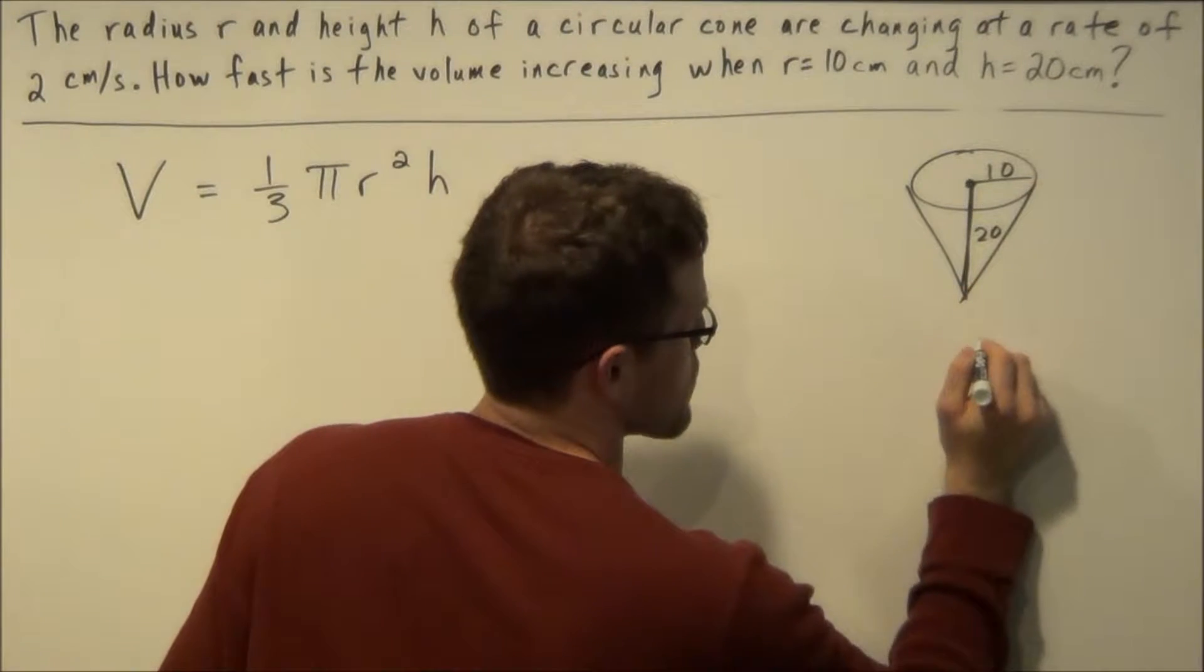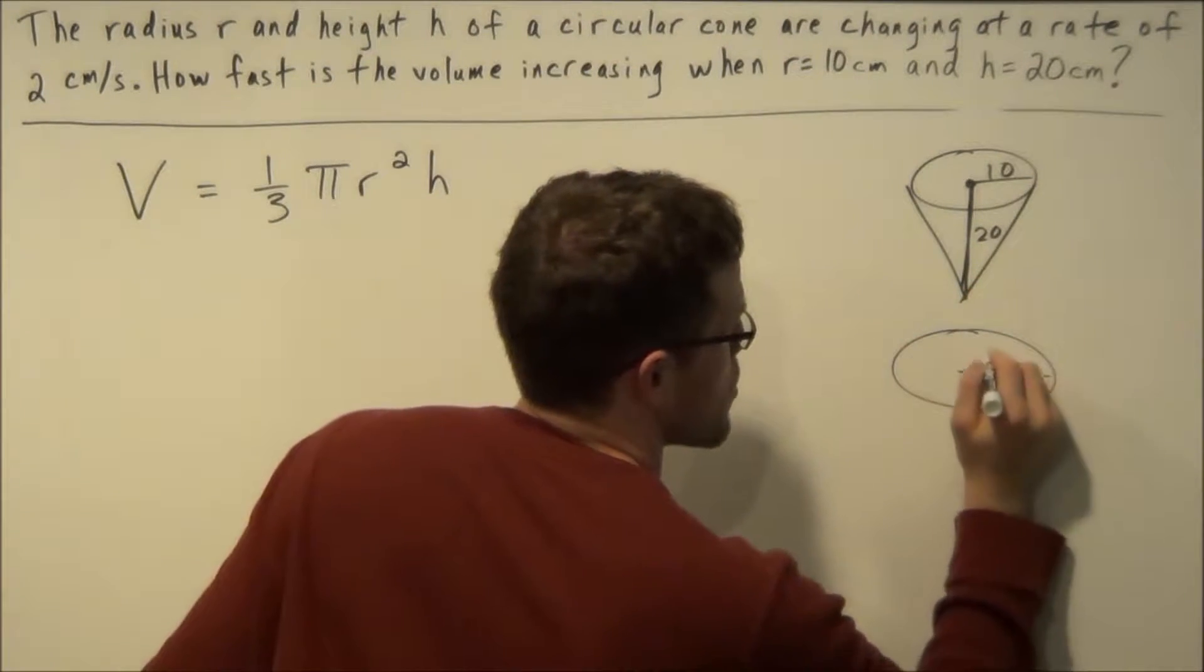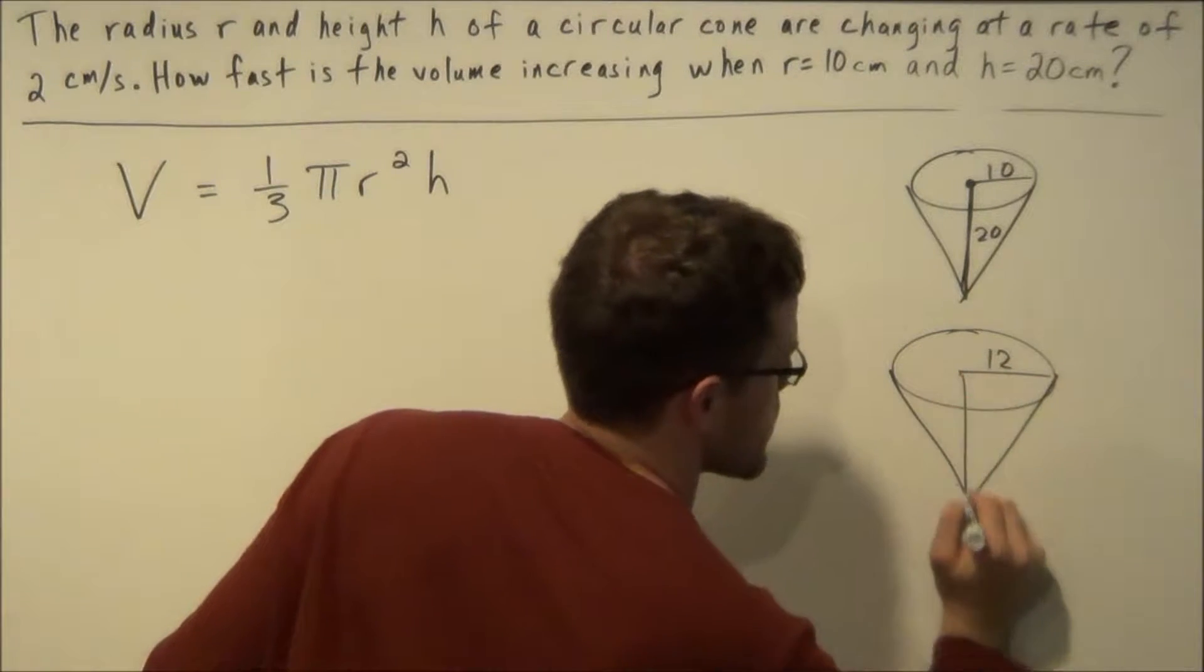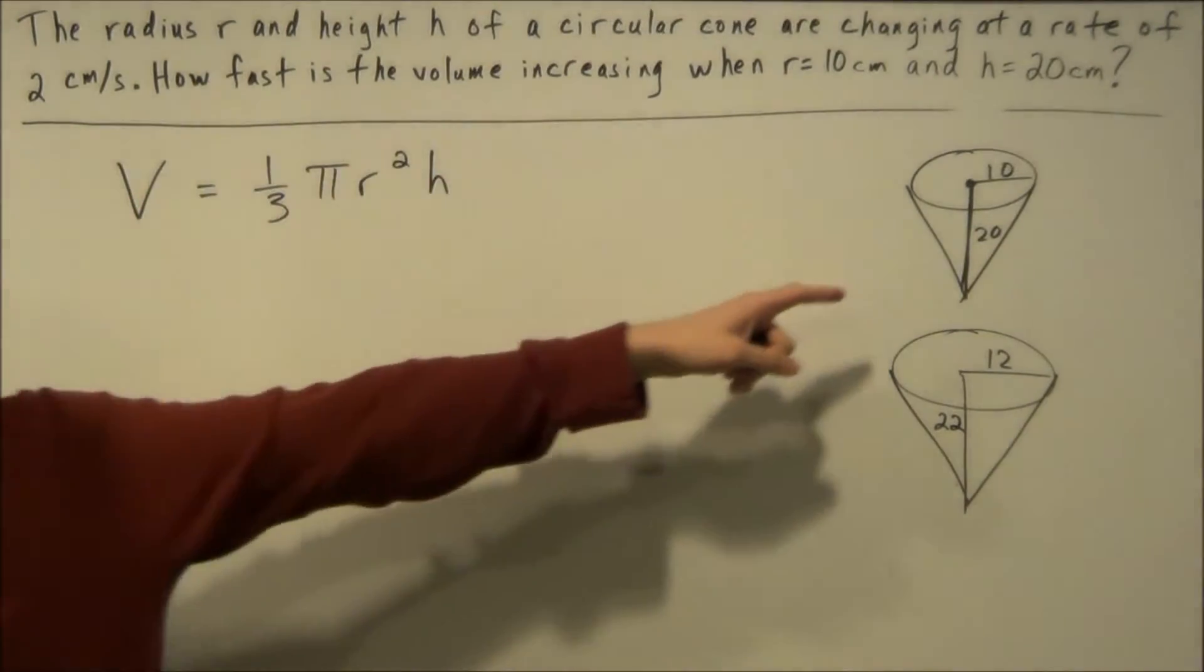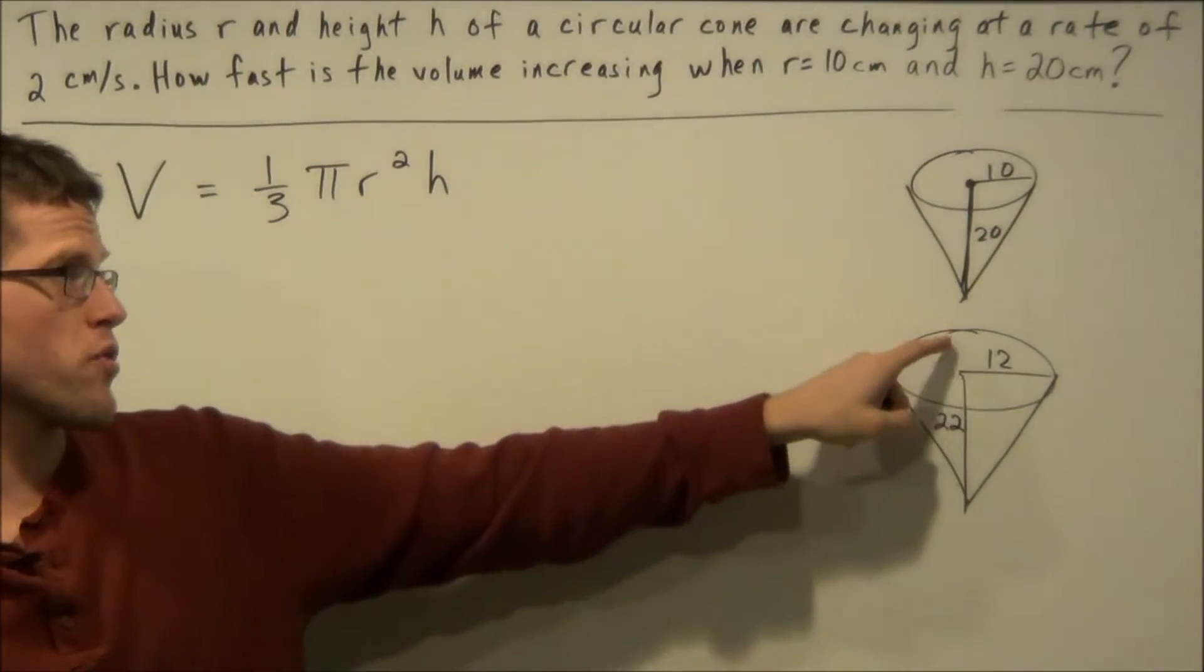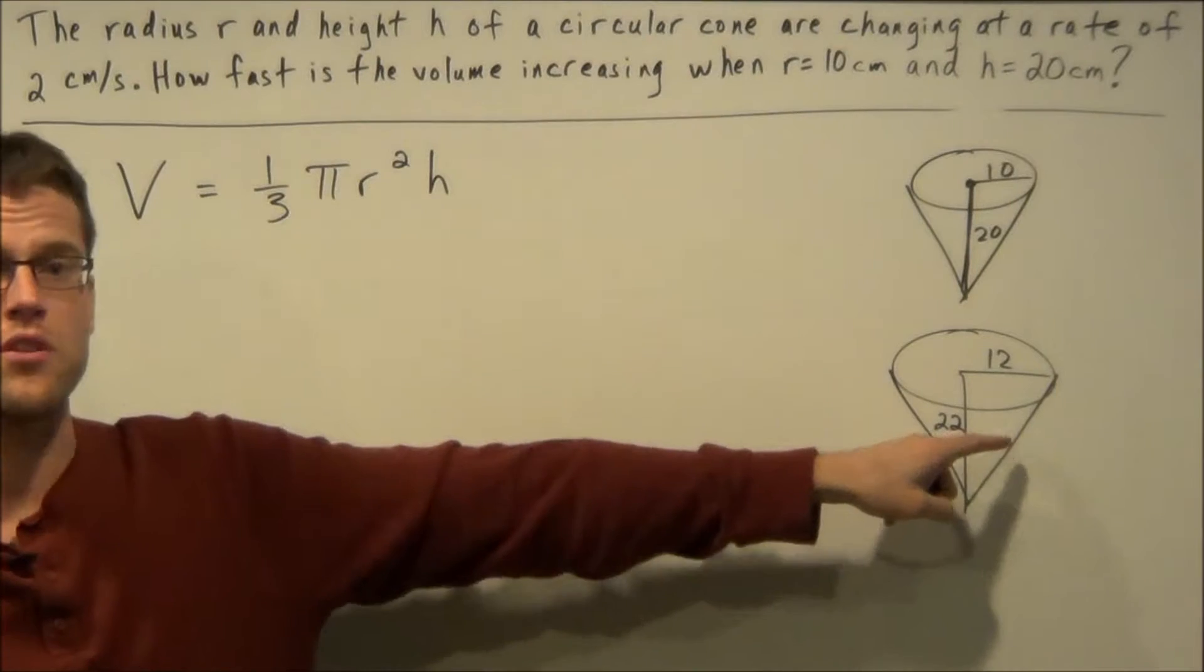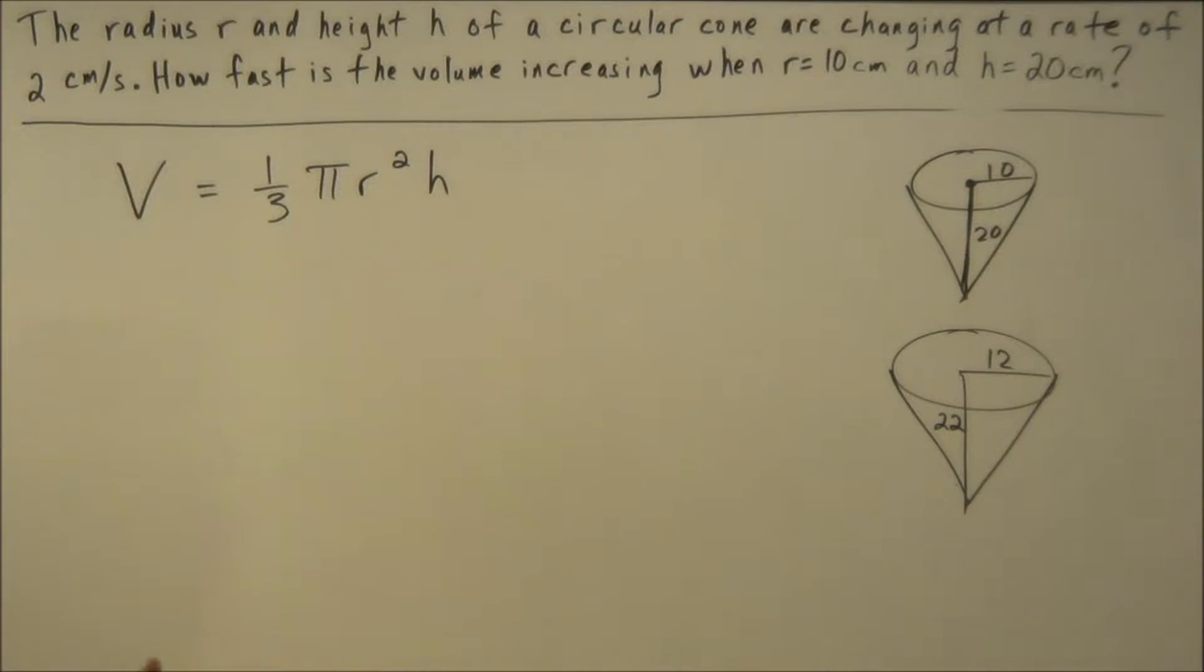So one second later from this moment the new radius would be 12 and the new height would be 22 because we're just adding 2 to each of them. And notice here that ratio of 1 to 2 is broken so we cannot use the ratio concept here to do this problem.